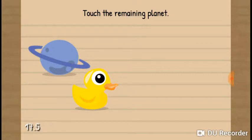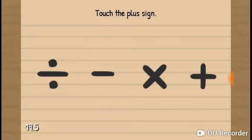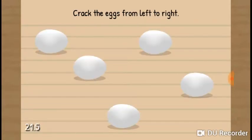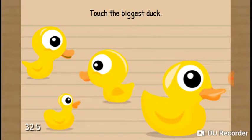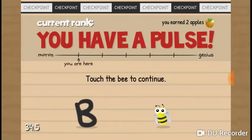Anyway, the remaining planet - there should be a planet duck, but this is the real world. So crack the eggs from left to right, press the red then blue then green. Which is the biggest duck? You have a pulse!